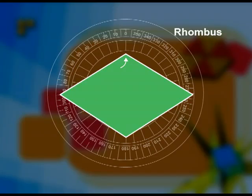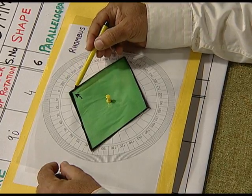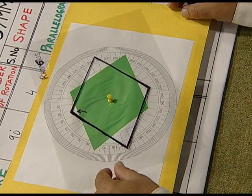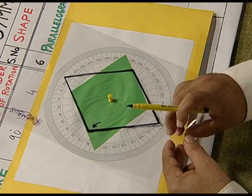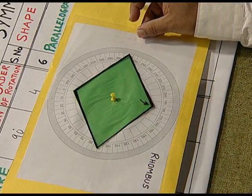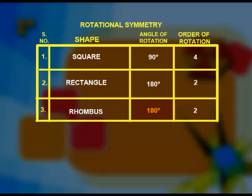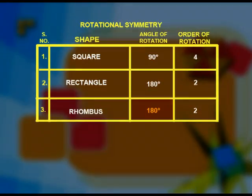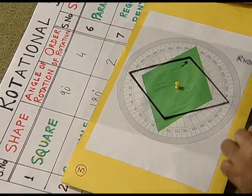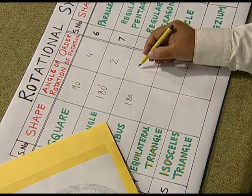Next, we take the case of a rhombus. When we slowly rotate it, initially the arrow is at 0 degrees. On a rotation of 90 degrees, it does not coincide. Continuing the rotation, after 180 degrees the rhombus takes its original shape. So the angle of rotation is 180 degrees. On further rotation, it comes back to its original position after a complete turn of 360 degrees. Hence, the order of rotation is 2.